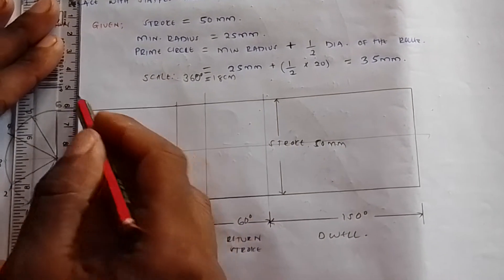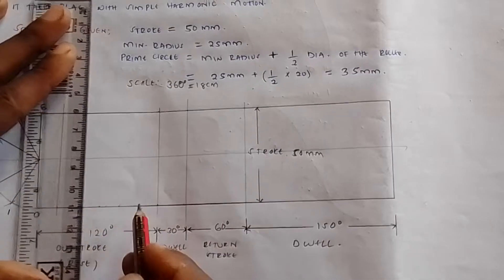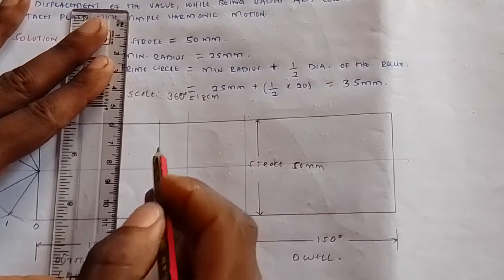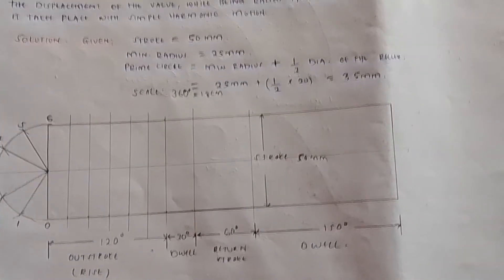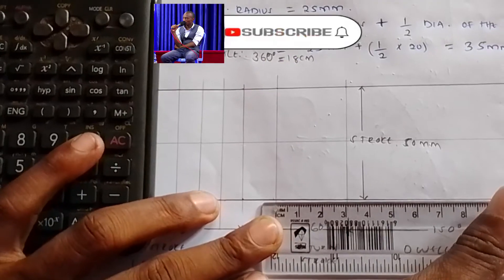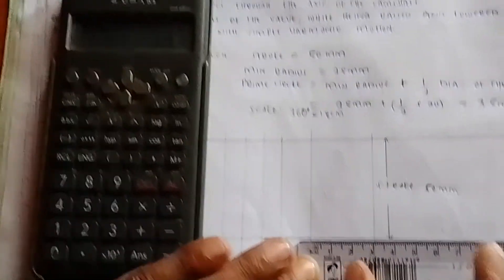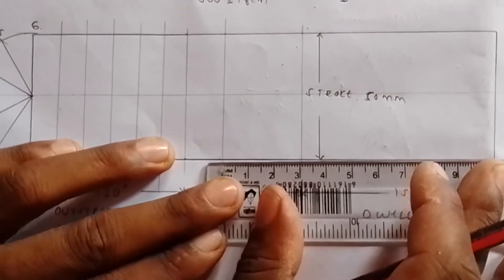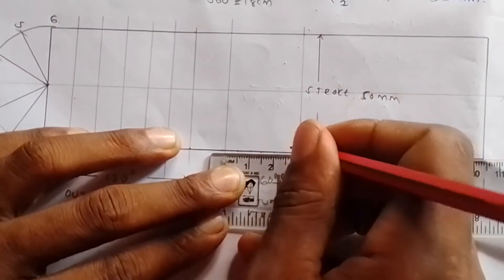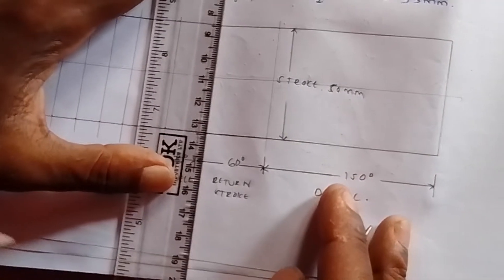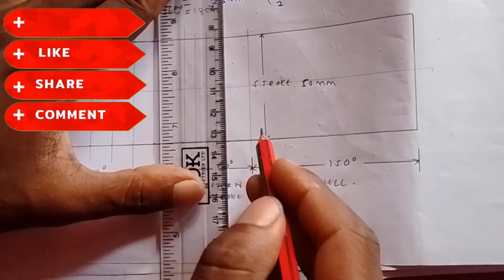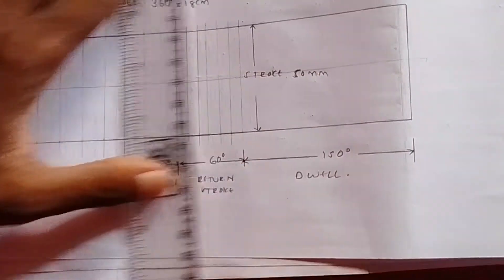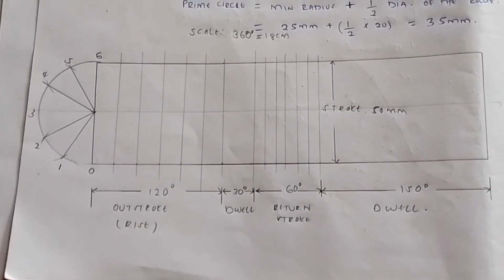Draw vertical lines at each 1-centimeter interval along the out-stroke. Then divide the return stroke into six equal parts. The return stroke was 3 centimeters; dividing by six gives intervals of 0.5 centimeters. Mark those intervals and draw vertical lines at each point. After you've done that, project your lines across from the semicircle points.